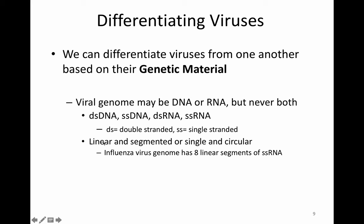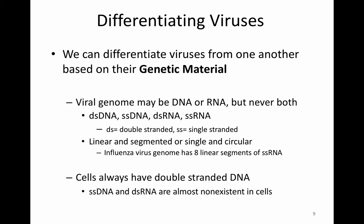The shape in which we see the DNA or RNA can be either linear or segmented, or single and circular — it just depends on the virus. The influenza virus, for example, contains eight linear segments of single-stranded RNA. Cells, on the other hand, always have double-stranded DNA. Single-stranded DNA and double-stranded RNA are almost non-existent in cells, so this is another difference between cells and viruses.